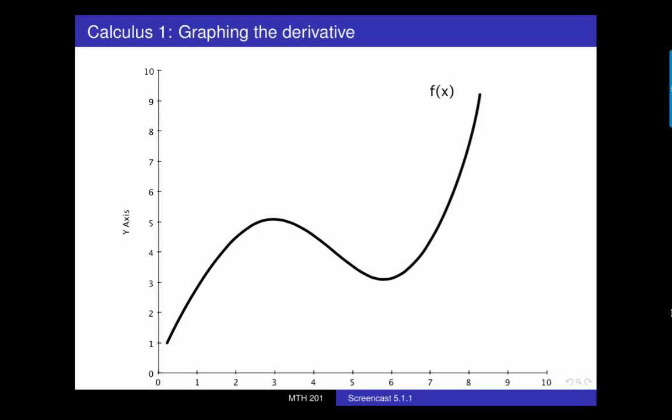So for example, if this is the graph of f, then we can say that f prime must be zero at these points because the slope of the tangent line is zero there on f. And likewise, f prime must be negative in this region and positive in these regions.